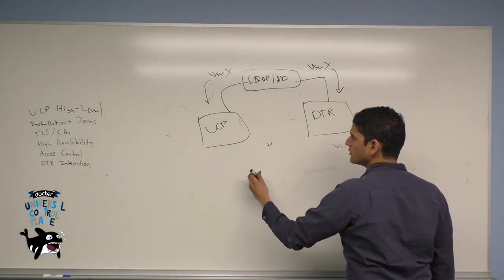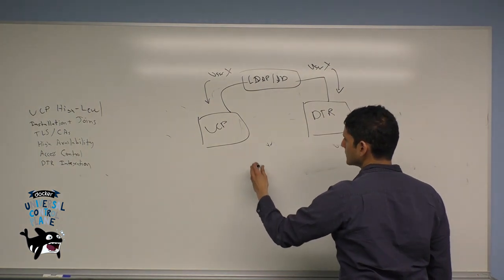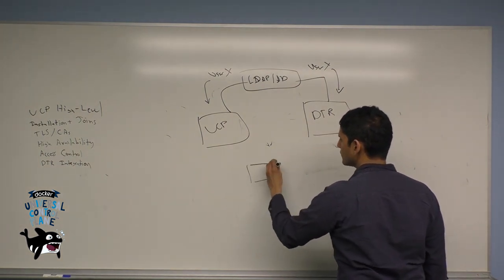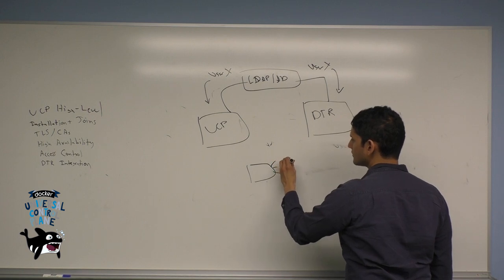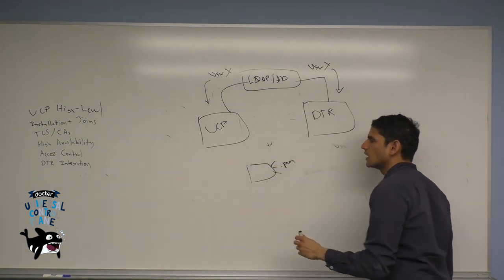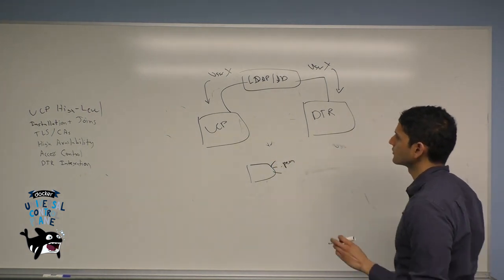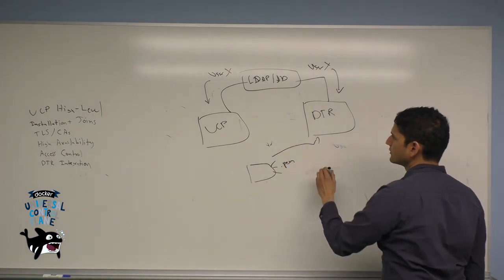For DTR, you expose the UCP certificate authority—this is a series of three .pem files—and you can use the UCP tool to do this. You upload that into DTR.